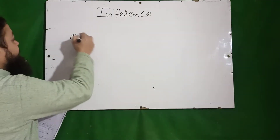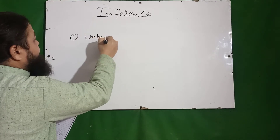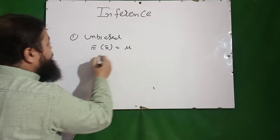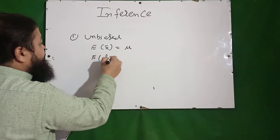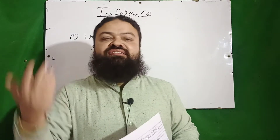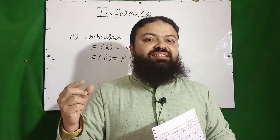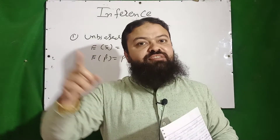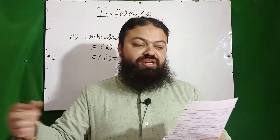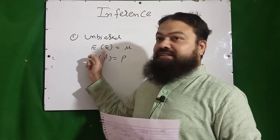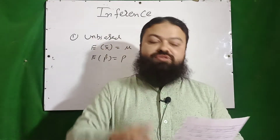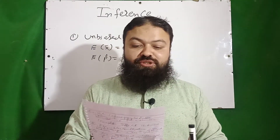Number one: an unbiased estimator may or may not be consistent. This is a very important concept. If we have an unbiased estimator — meaning E(x̄) = μ or E(P̂) = P, or for any estimator θ₁ — if it is unbiased, it is not necessary that it must also be consistent. It can be consistent or not. So an unbiased estimator may or may not be consistent.